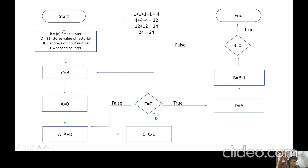Next we initialize A with zero, then the value of D is added to A and C is decremented by one each time. The next decision block checks whether C is equal to zero. If it is not equal to zero, it keeps adding D to A and decrementing C by one. If it is true, it moves to the next block.